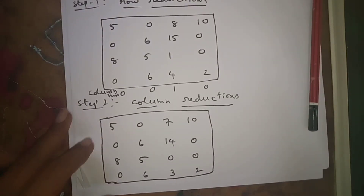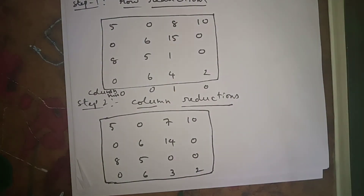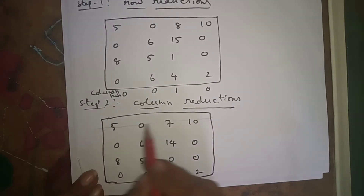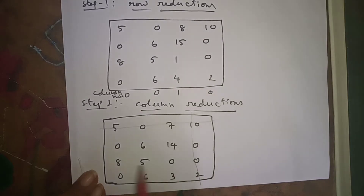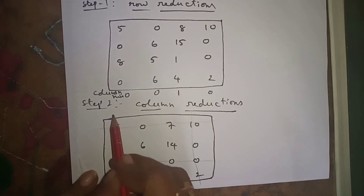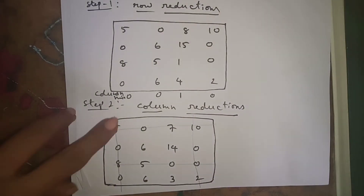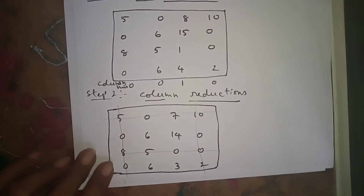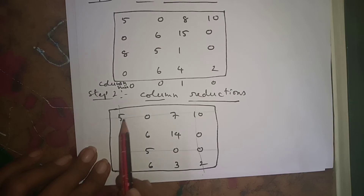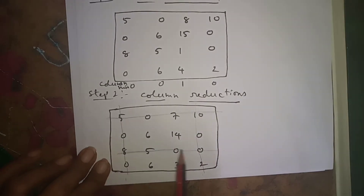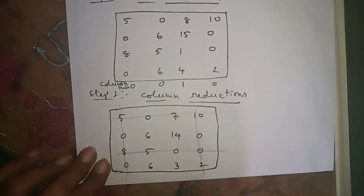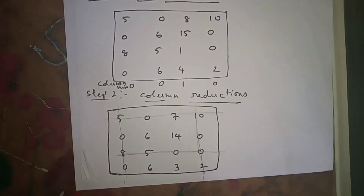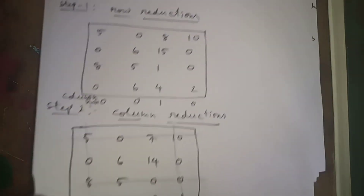After the column reductions, we draw the minimum number of lines to cover all zeros. Drawing one line here, one more line here, and one more line. We draw the minimum number of lines to cover all zeros and check whether all zeros are covered. Now all zeros are covered.